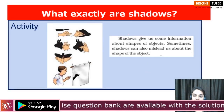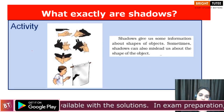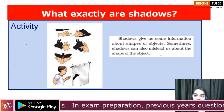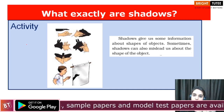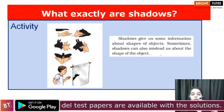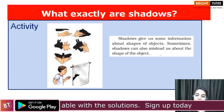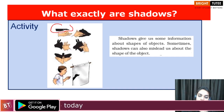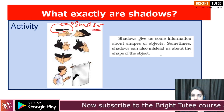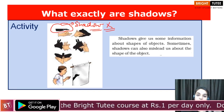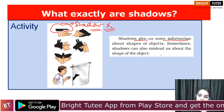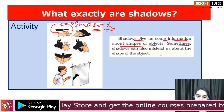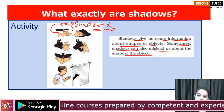You might have played like this in your childhood — whenever the lights went off and there was a candle in your room, you may have tried creating different images by different hand gestures. You could have created a deer, you could have created a crocodile. But when you observe these shadows, can you identify that these are the shadows of your hand? No — you cannot, because they are misleading. They create an image of some other familiar object. So shadows give us some information about the shapes of objects, but sometimes shadows can mislead us about the shape of the object.